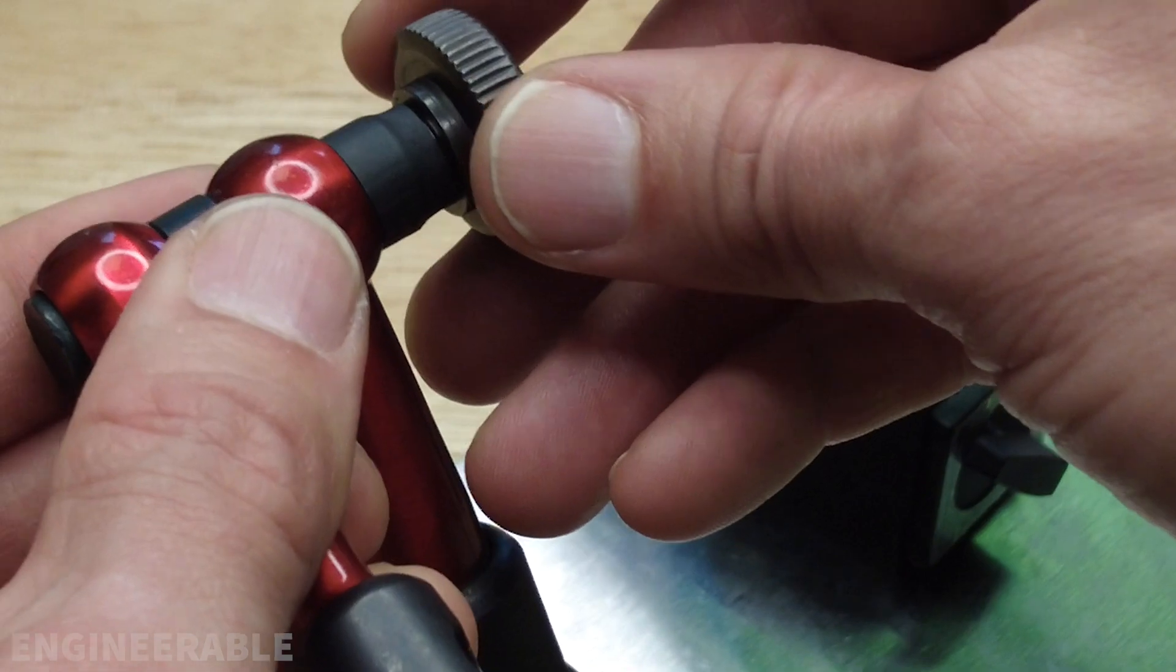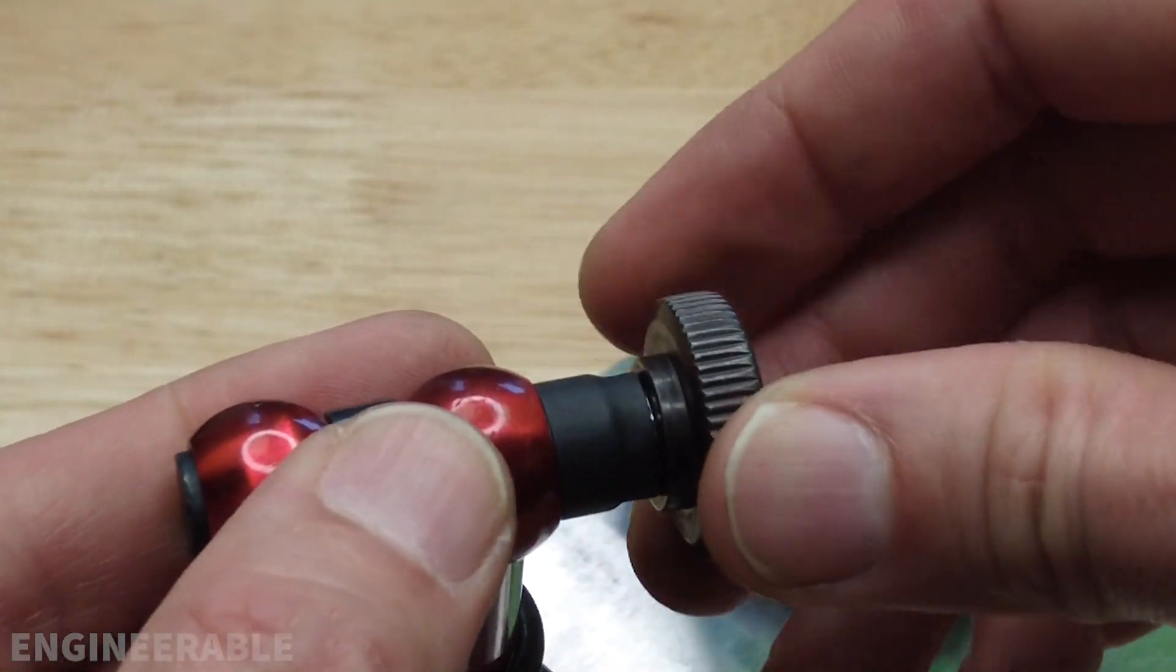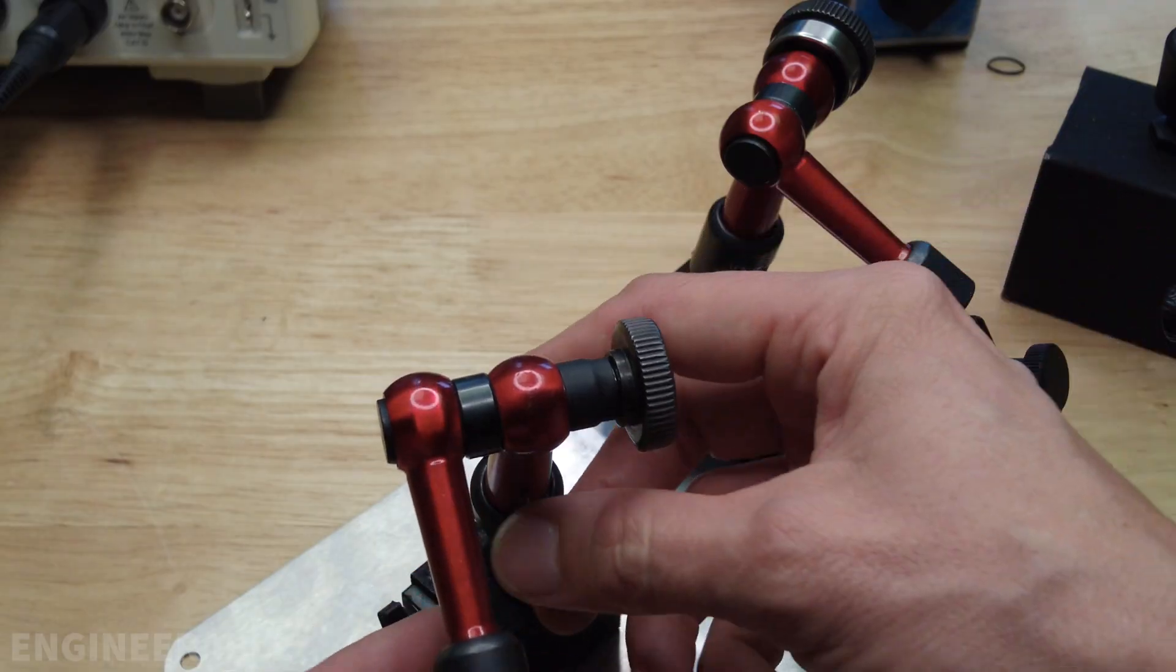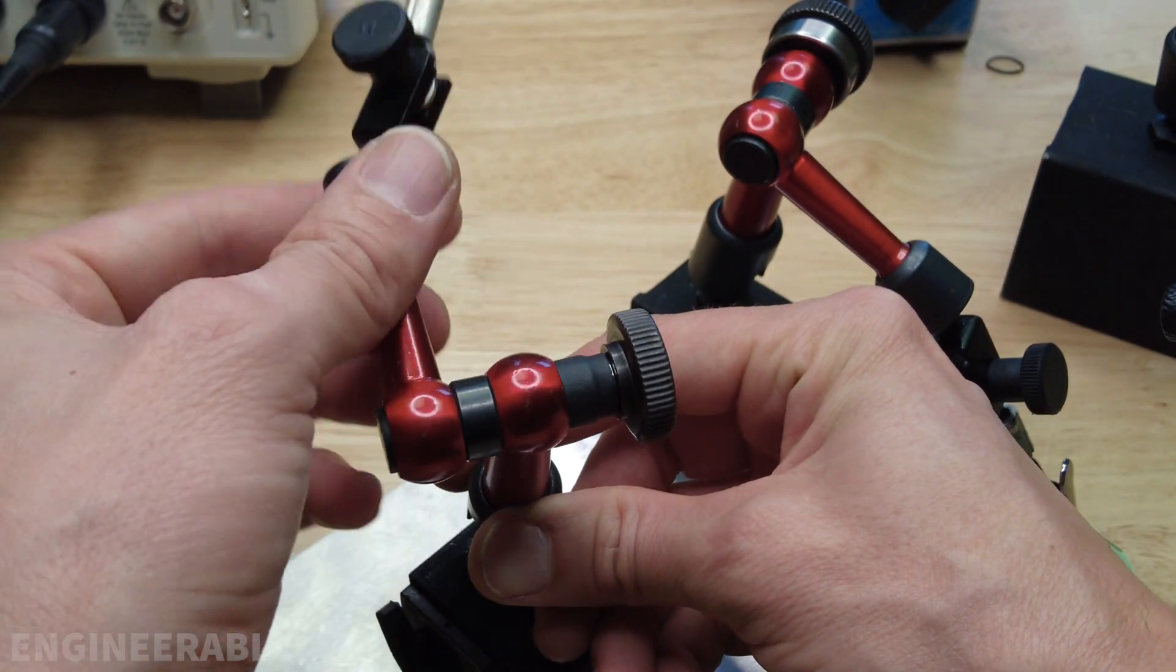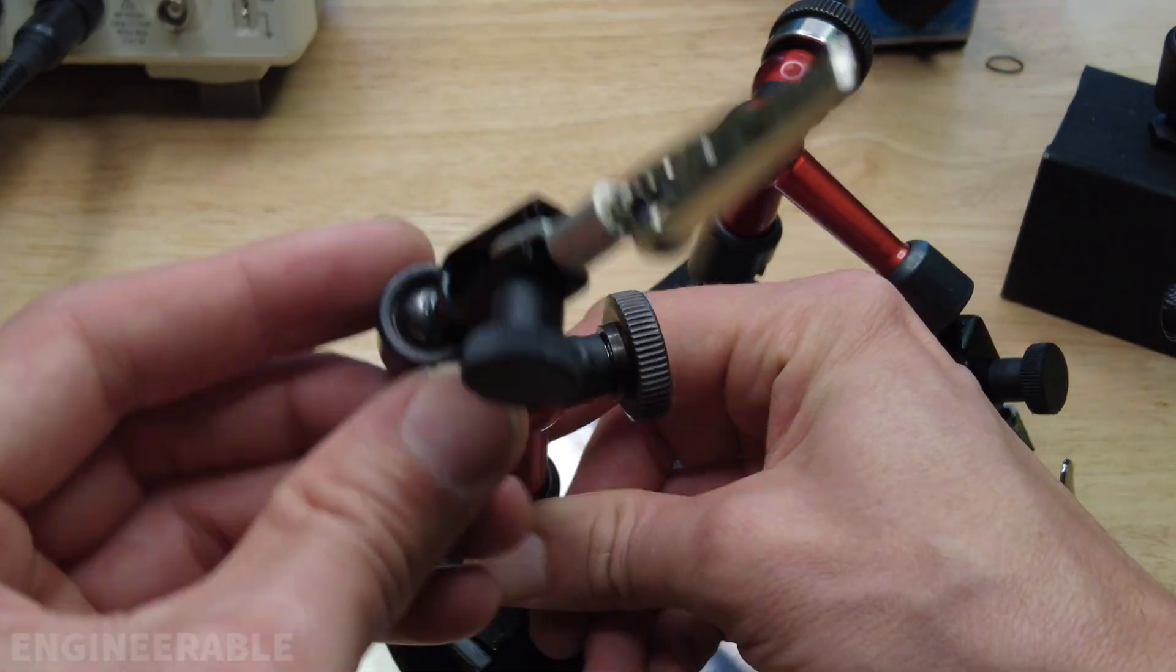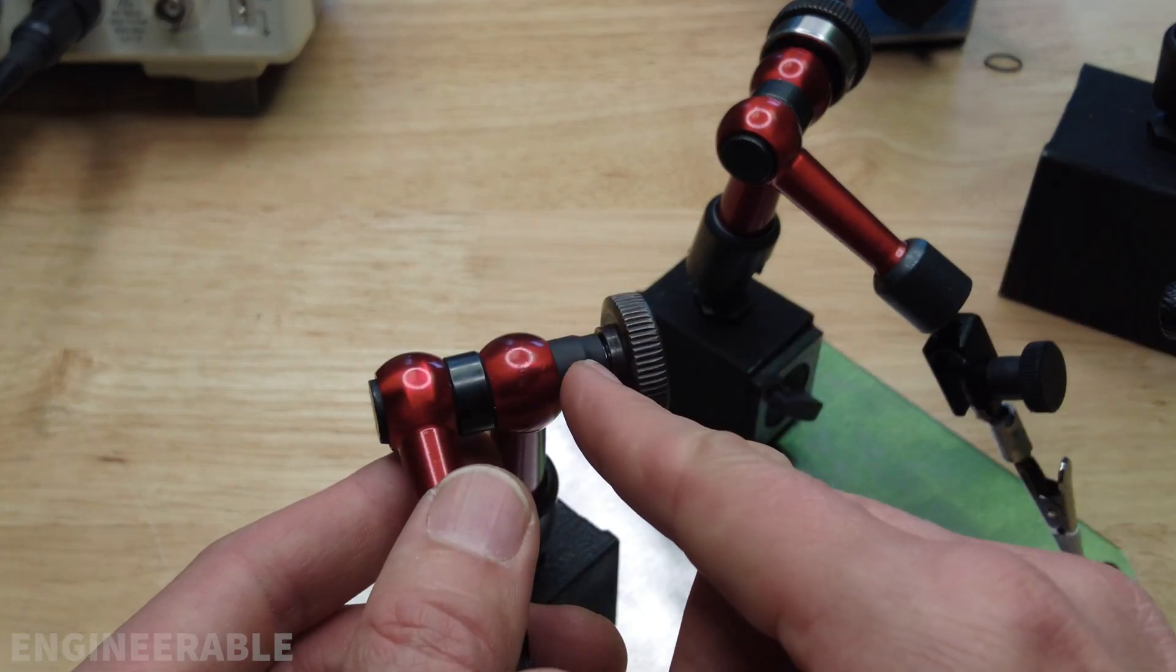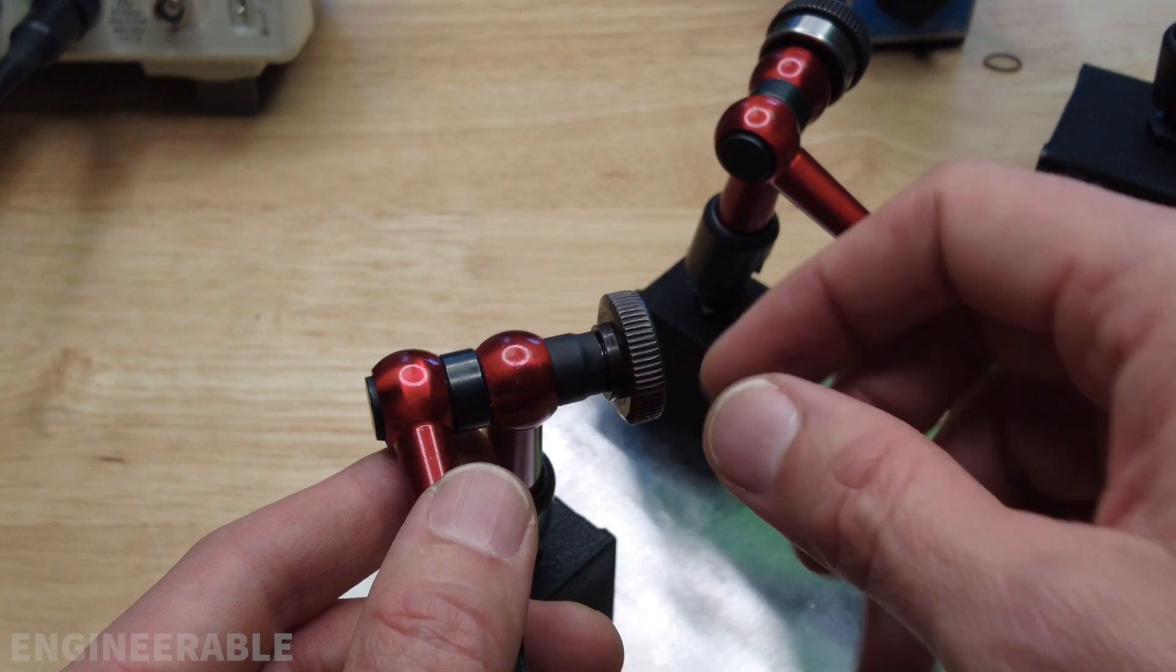And then it can't touch the thumb wheel, because if it touches the thumb wheel at all, if you have it very loose, it's going to stop the thumb wheel from spinning like it is now. So there has to be some clearance between the heat shrink and the thumb wheel.